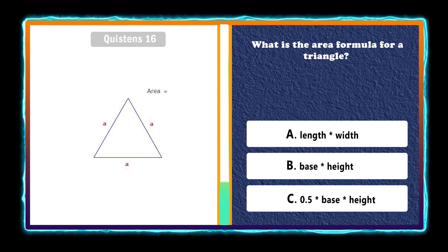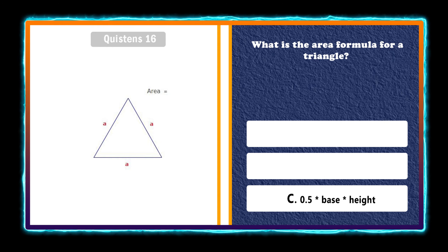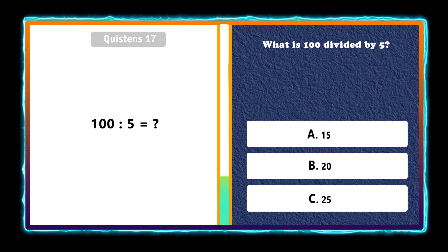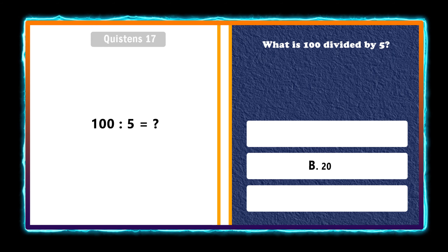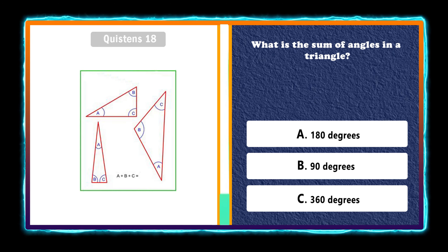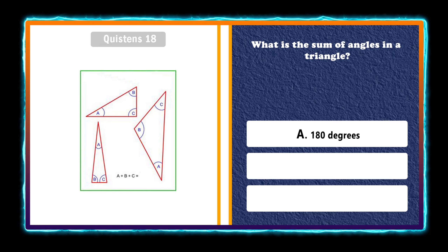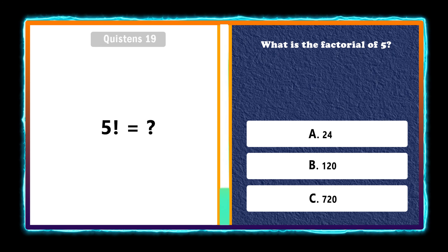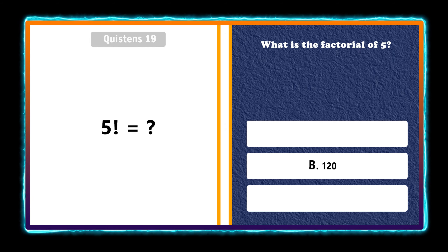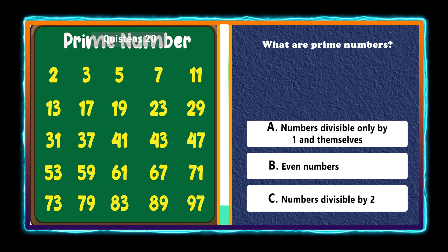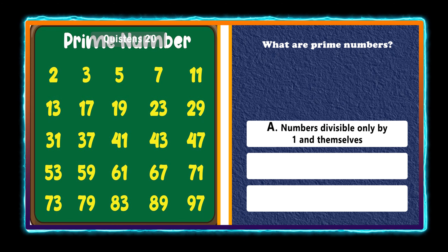What is the area formula for a triangle? 0.5 base times height. What is 100 divided by 5? 20. What is the sum of angles in a triangle? 180 degrees. What is the factorial of 5? 120. What are prime numbers? Numbers divisible only by one and themselves.